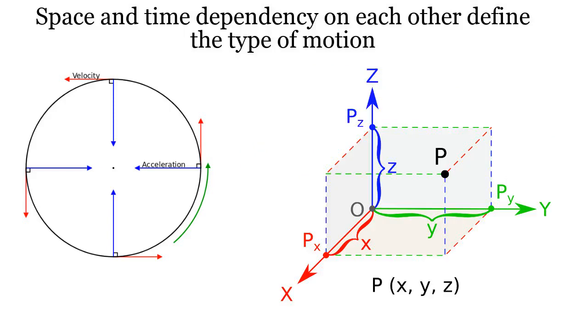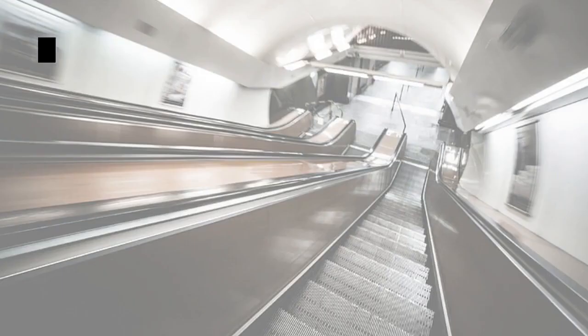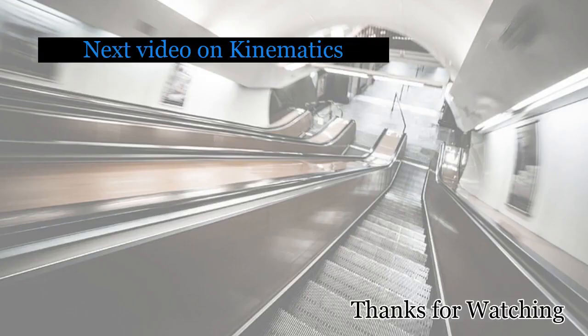We can see that the two variables, space and time, decide the type of motion, that is circular, elliptical, etc. Thus, we use the mathematical construct of coordinates to define and understand motion.